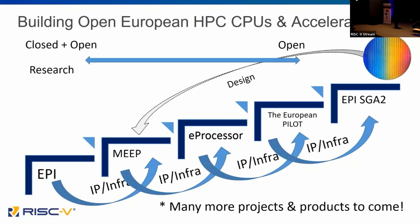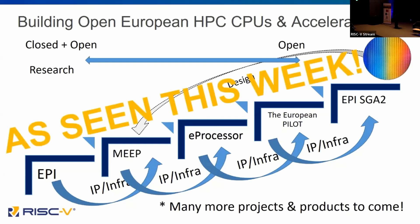At RISC-V week, you've seen a lot of details on these projects and more. Highlighting some of the high-performance computing work: we've talked about EPI, there have been posters and discussions on the MEEP infrastructure, eProcessor, ePilot, and the second version of the SGA2, all combined to create an ecosystem around RISC-V — both hardware and software accelerators, processors, and the software stack that runs on them. All of this shows you this is just the beginning.